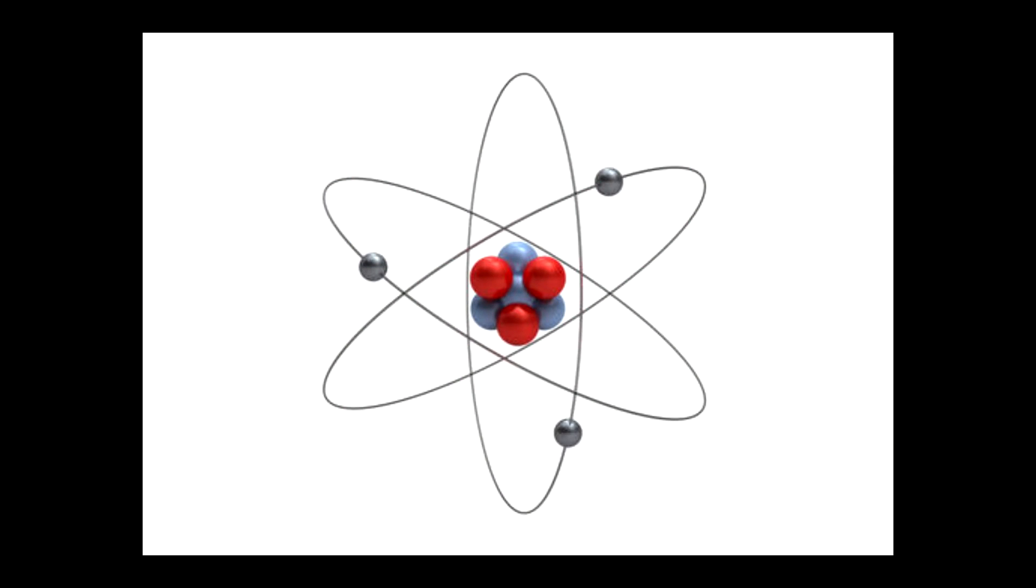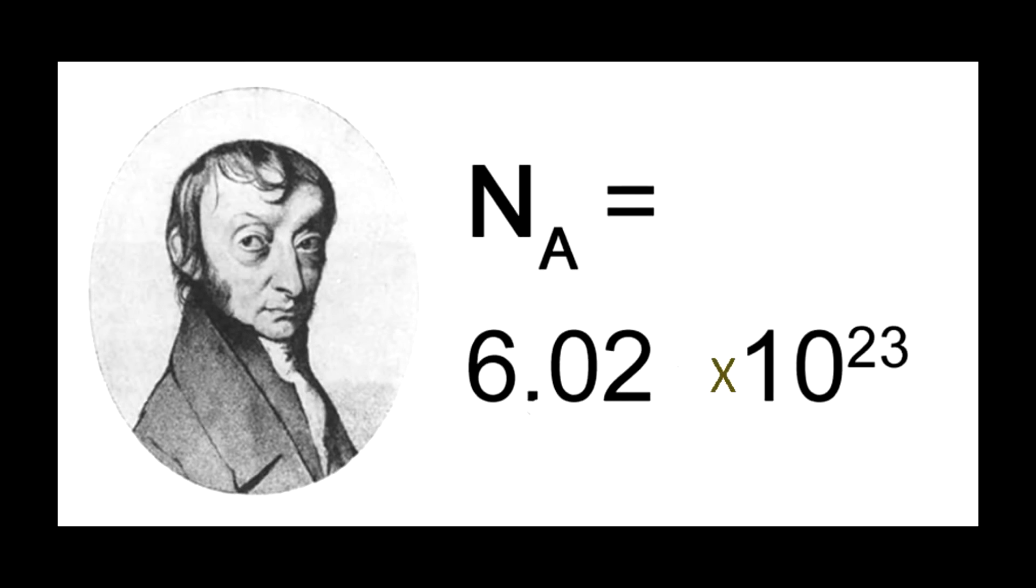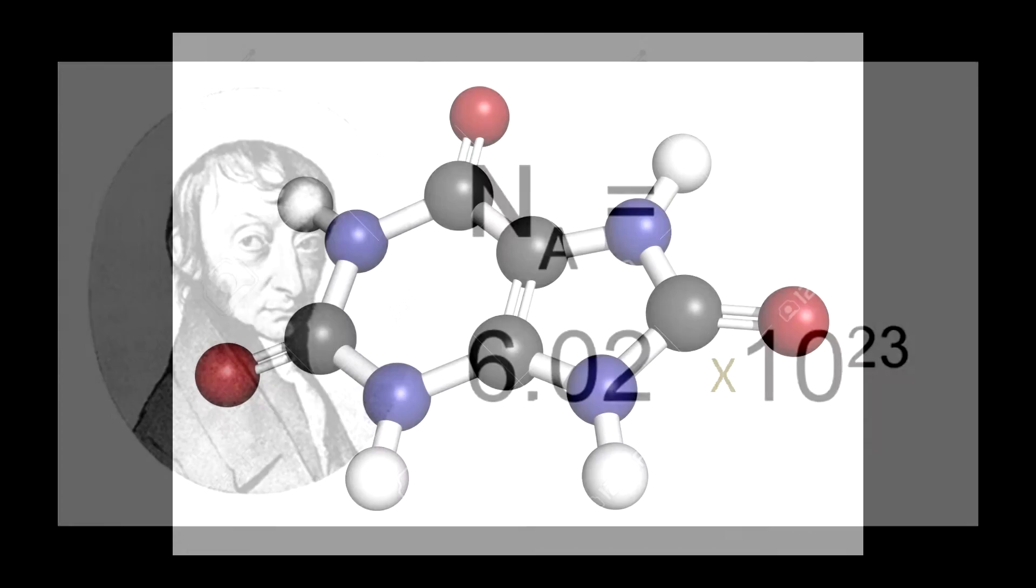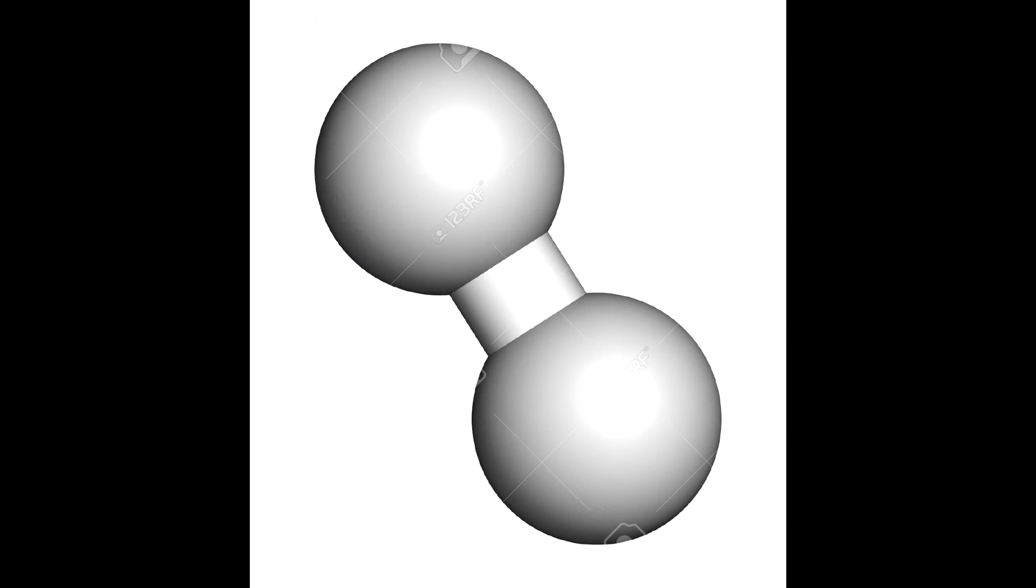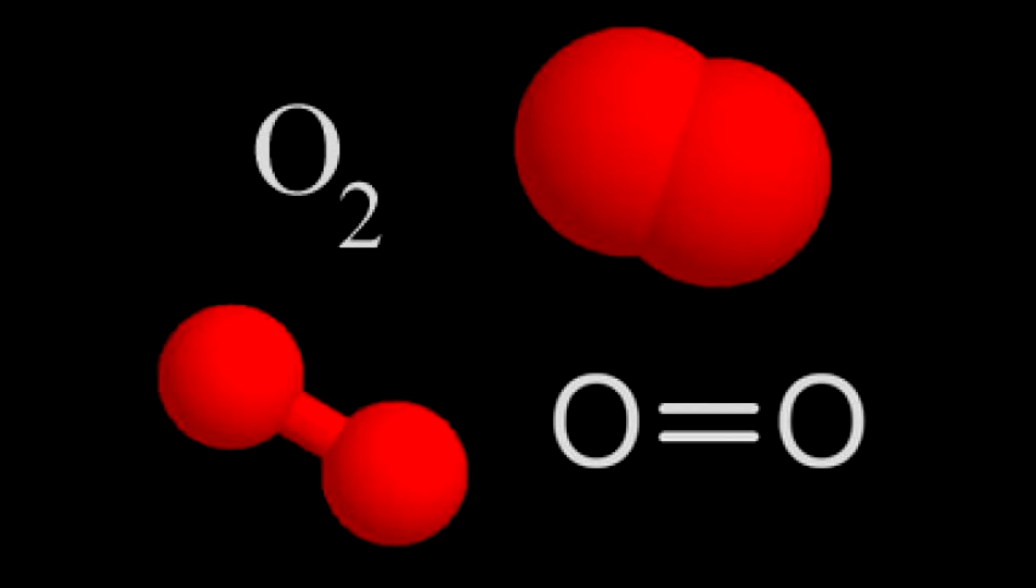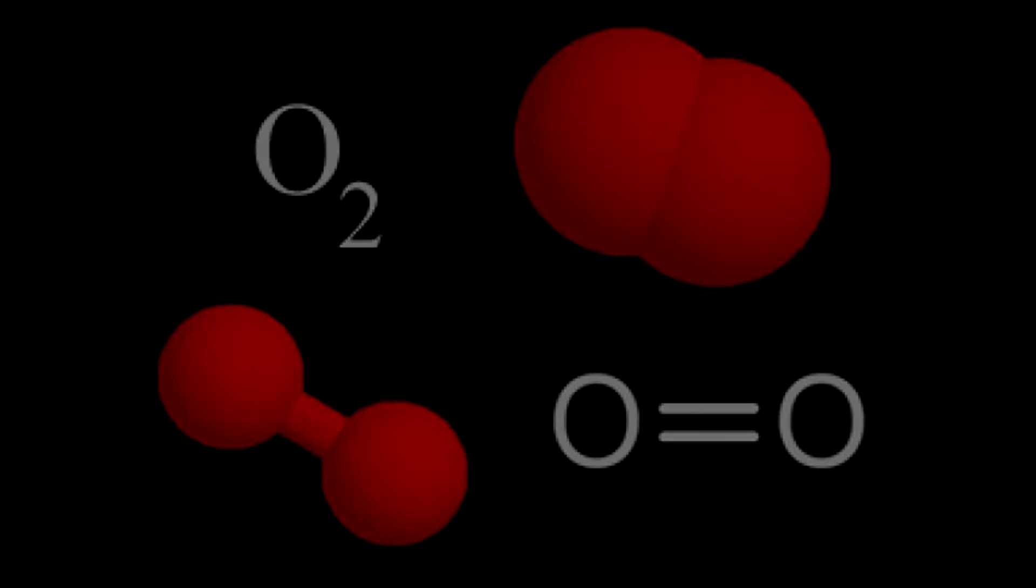The first stuffs have their being as motes, called unclefts. These are mightily small. One seed weight of waterstuff holds a tale of them like six followed by twenty-three knots. Most unclefts link together to make what are called bulkbits. Thus the waterstuff bulkbit bestands of two waterstuff unclefts, the sourstuff bulkbit of two sourstuff unclefts, and so on.